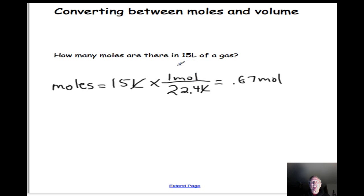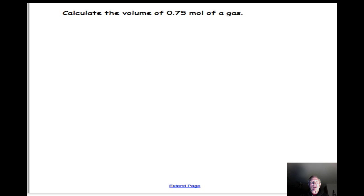This problem is to calculate the volume of 0.75 moles of a gas. Volume equals 0.75 moles. Now we need to cancel out moles, so 1 mole goes on the bottom and 22.4 liters goes on top. Moles cancel, we're left with liters. 0.75 times 22.4 comes out to be 16.8 liters.